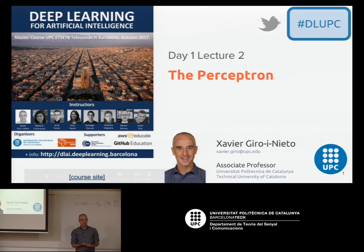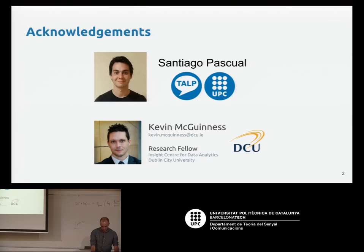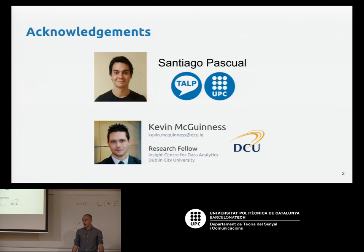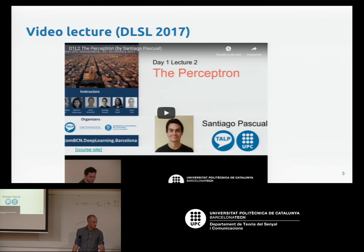Let's start with the first lecture called the Perceptron. The Perceptron is the very basic unit that powers all deep learning and neural networks. Some of the material I'm using was developed by Kevin McGuinness from Dublin City University and Santiago Pascual, also one of the instructors of this course. In case you want another explanation about this topic, you have the video from Santi from last winter — click here and you have this lecture in 20 minutes, explained by Santi.